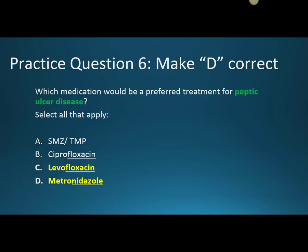Which medication would be a preferred treatment for peptic ulcer disease? Select all that apply. This is a little tricky — a fluoroquinolone would work, but you want to think that levofloxacin is only taken once a day, which is better than twice a day. So if given the choice for preferred treatment, I would prefer levofloxacin over ciprofloxacin. And then metronidazole is often added as a fourth agent in quad therapy for peptic ulcer disease.